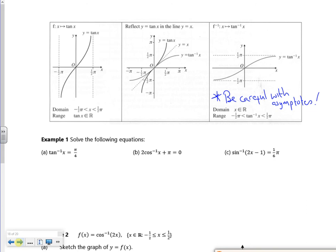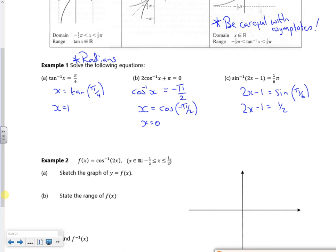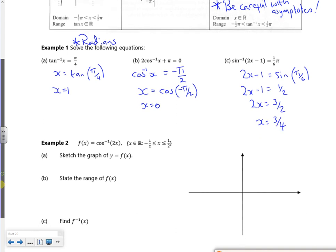So we're on six minutes. I might just quickly do example one. It's just a bit of rearranging and solving. So I want to get rid of inverse tan. So I've got x is tan of pi by 4. Make sure you're in radians. And that'll give me x is 1. This one, if I take the pi over and divide by 2, that's cos to the minus 1 of x. So x is cos of minus pi by 2, which is 0. Last one. So 2x minus 1 is sin of pi by 6. So 2x minus 1 is equal to a half. Add on the 1, divide by 2 to get 3 by 2. So I'm just doing a bit of solving. We're on seven minutes, so I'm going to stop that vid there.